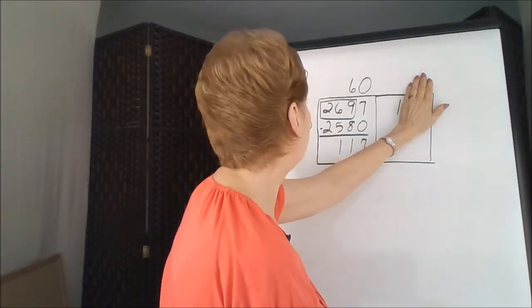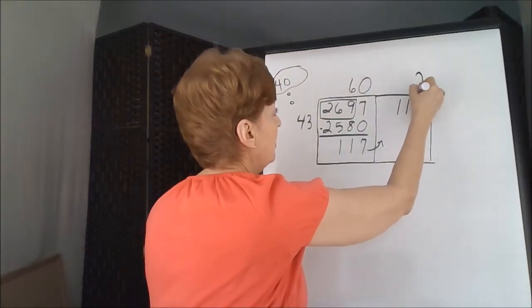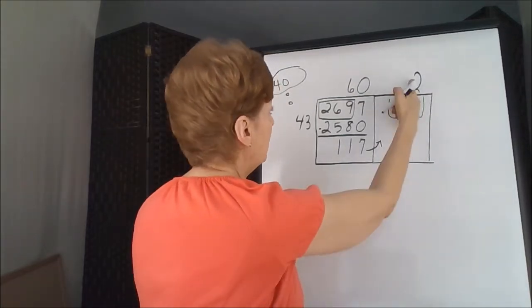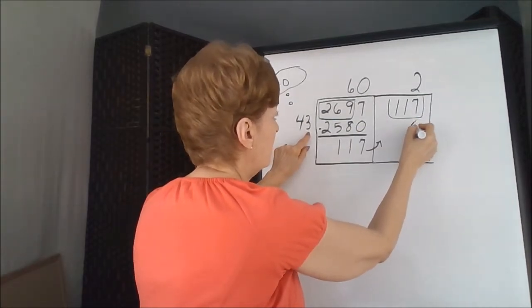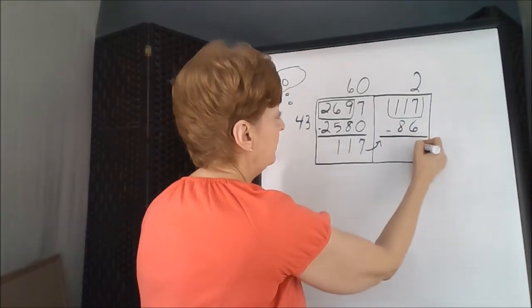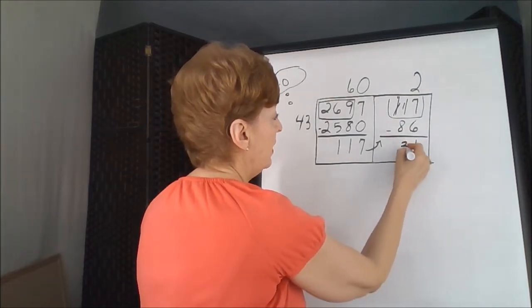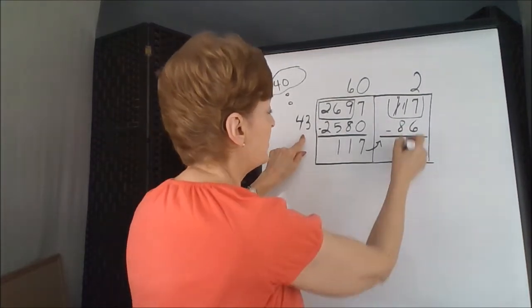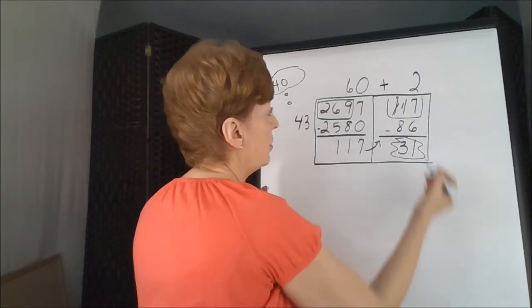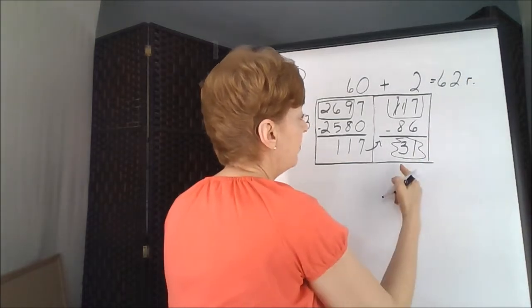4 goes into 1, no. 4 goes into 11, yes, 2 times. We're going to put our 2 here. Nothing is outside of the box, we use the whole thing, so it's just a 2. 2 times 3 is 6, 2 times 4 is 8, we will subtract. 11 take away 8 is 3. 31 is smaller than the divisor, so we know we're finished at this time. These were partial answers, so we're going to add them together. 62 is our answer, with a remainder of 31.